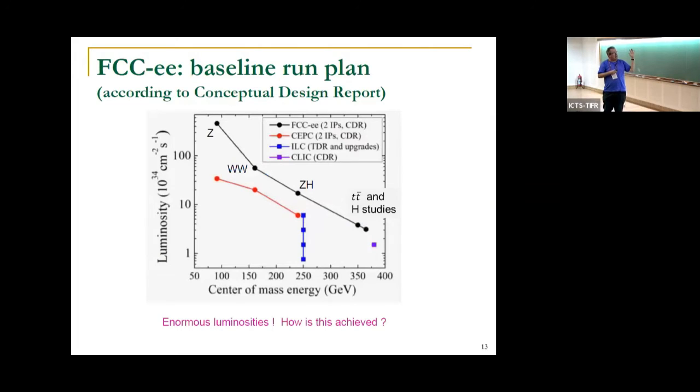Back to FCC. Let's consider the various running points, luminosities against center of mass energies. FCC is here in black, going from the Z pole up to about 365 GeV. Higgs studies start here at 240 GeV. These luminosities are enormous, going up to over 10^36. Even where you do the Higgs physics, you're substantially above where the ILC will be, delivering many more Higgs per second.